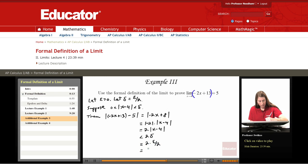And so, we quickly and easily get our result on this one, that absolute value of negative 2x plus 13 minus 5 is less than epsilon.